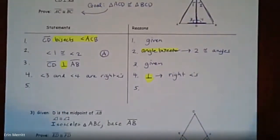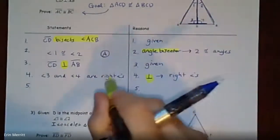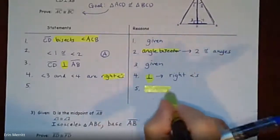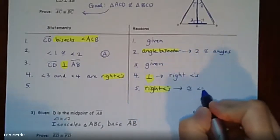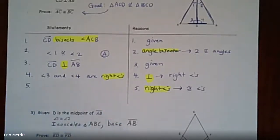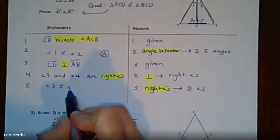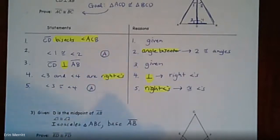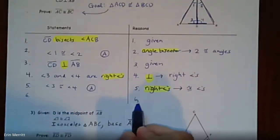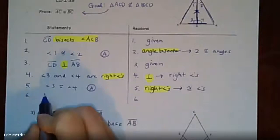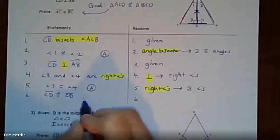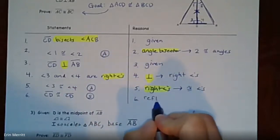Right angles imply congruent angles. If you weren't sure, you could say both congruent angles and right triangles — that would be fine. Now we have two pairs of congruent angles and we're trying to get those triangles congruent. Looking at the picture, we can look for a vertical angle or a reflexive side. In this case, the triangles share side CD down the middle, so CD is congruent to CD by the reflexive property.